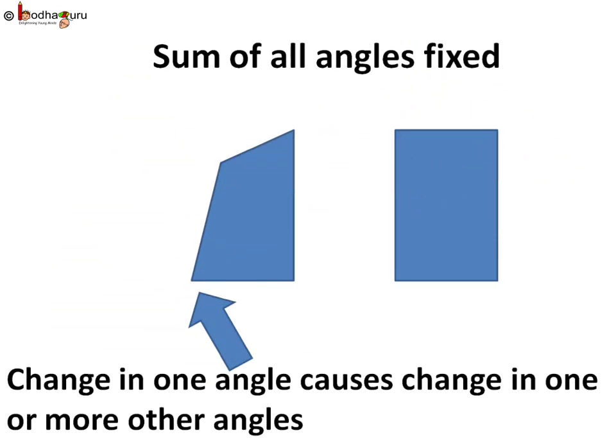In few shapes, sum of all angles is equal. Hence, when one angle reduces, one or more angles increase to compensate for that. Thus, the shape transforms into some new shape.